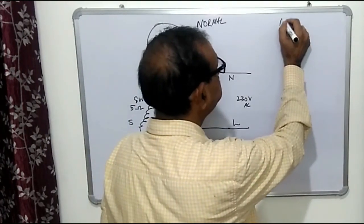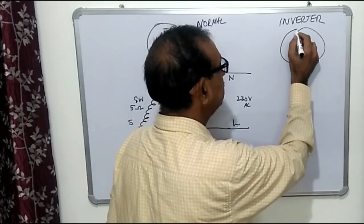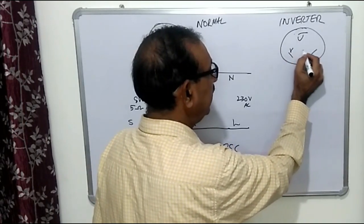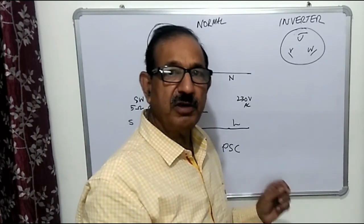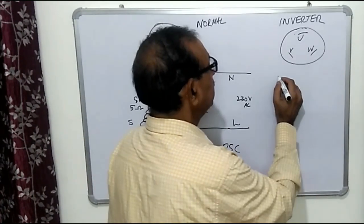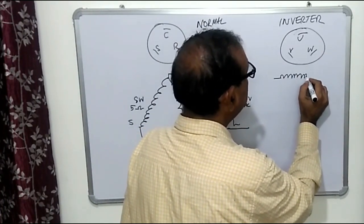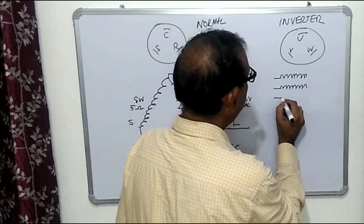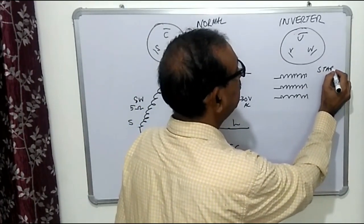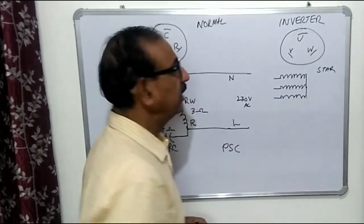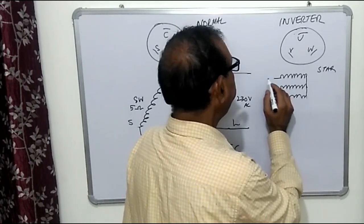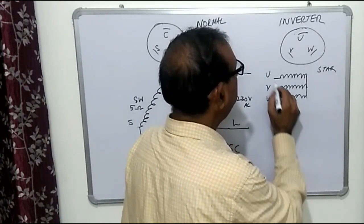For the inverter air conditioner compressor, we also have three terminals but here they are U, V, and W. This is a variable speed compressor and we use two types of motors: VFD or BLDC motor. For these motors we have three windings of the same resistance. One end of all windings is connected together — this is called a star connection.